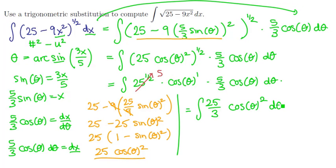This guy is on our list of 20. So keeping the 25 thirds out in front the integral of cosine squared is 1 half theta plus 1 half the sine of theta times the cosine of theta. There's our anti-derivative.